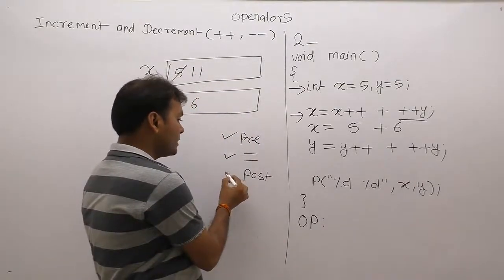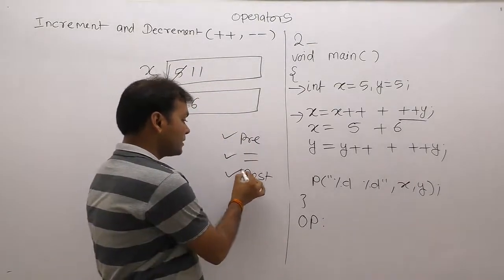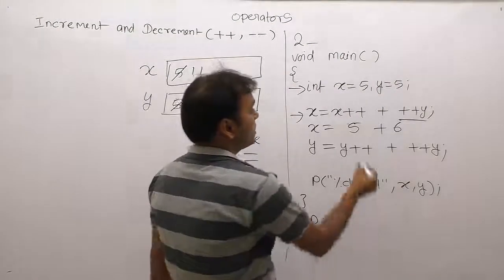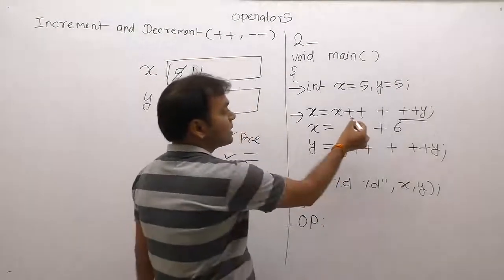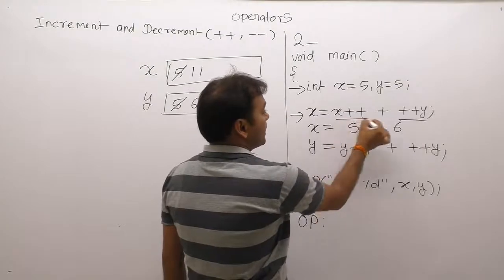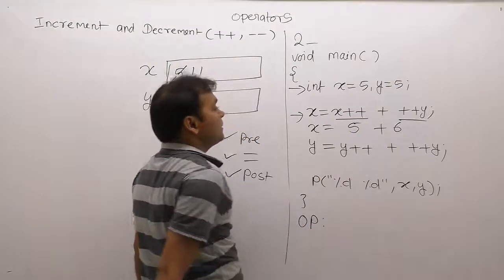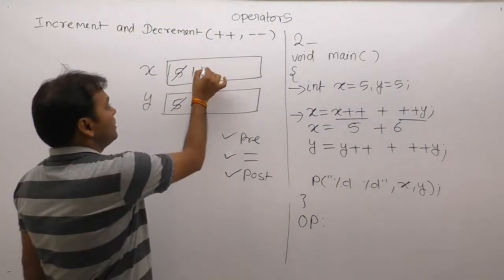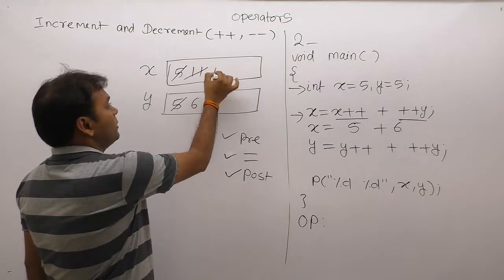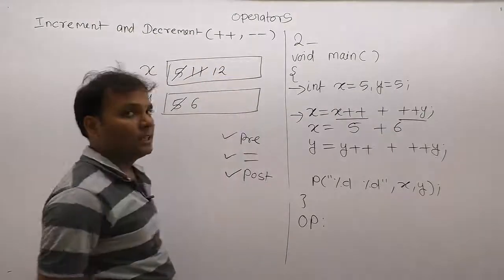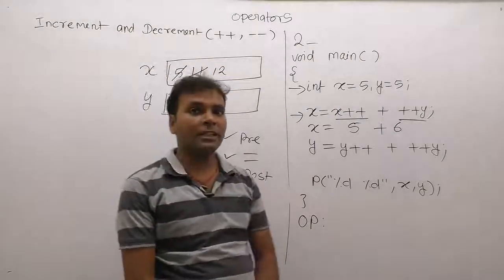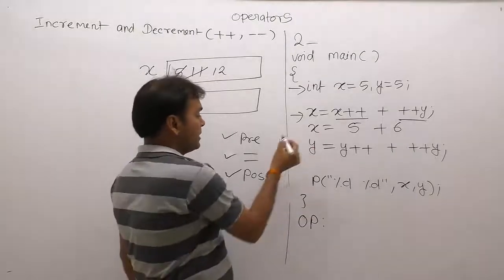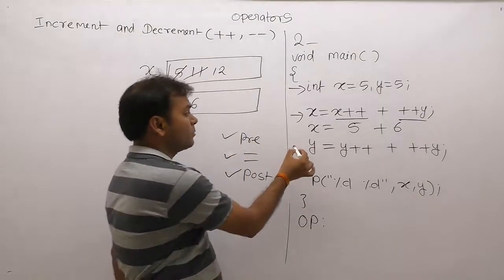The next pending operation is the post-increment. According to the post rule, the post-increment is applied to variable x. So x is incremented once more and x becomes 12. This completes the first expression.